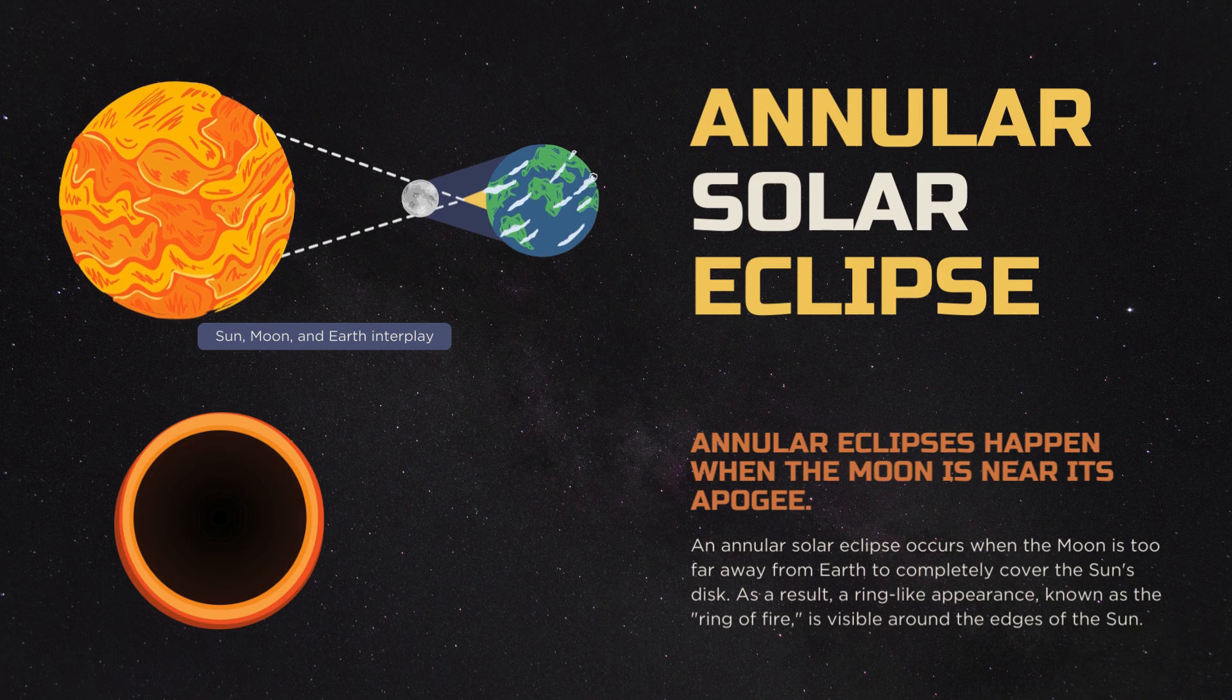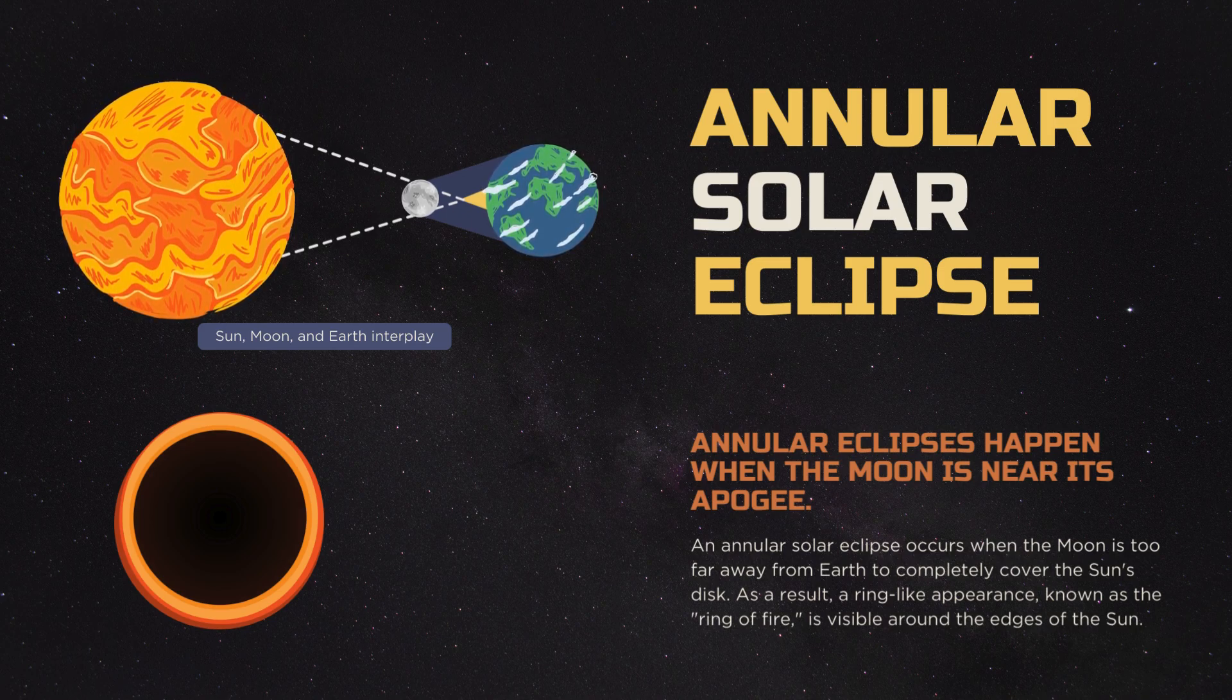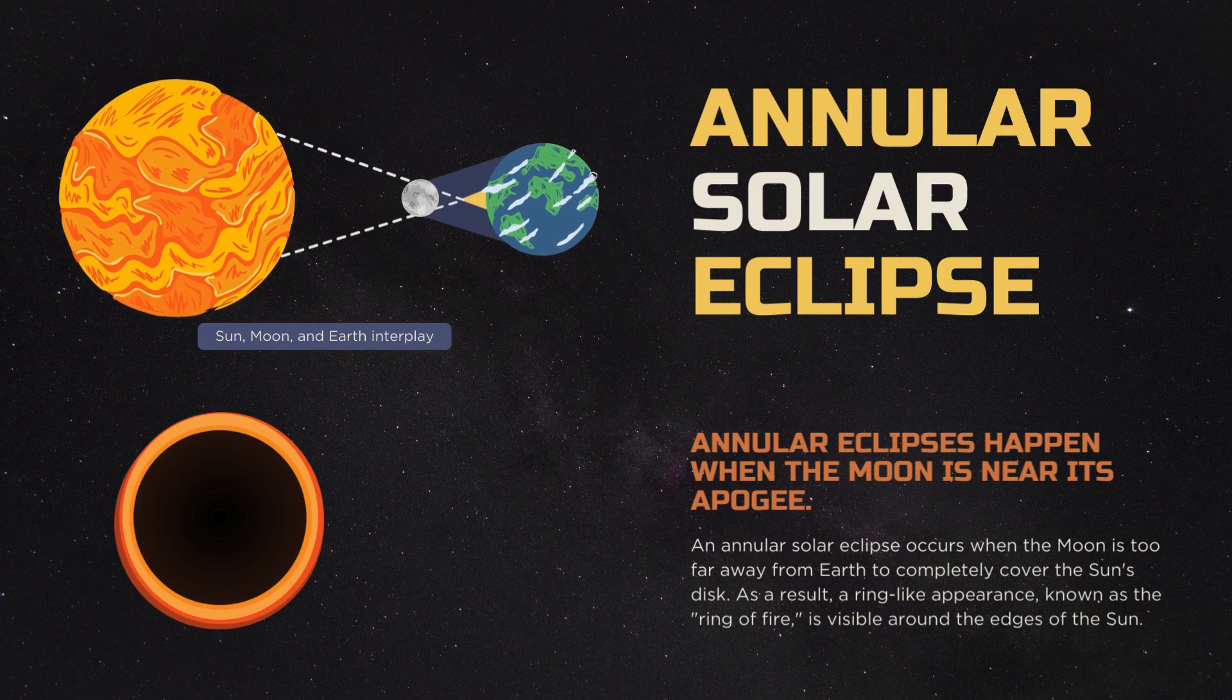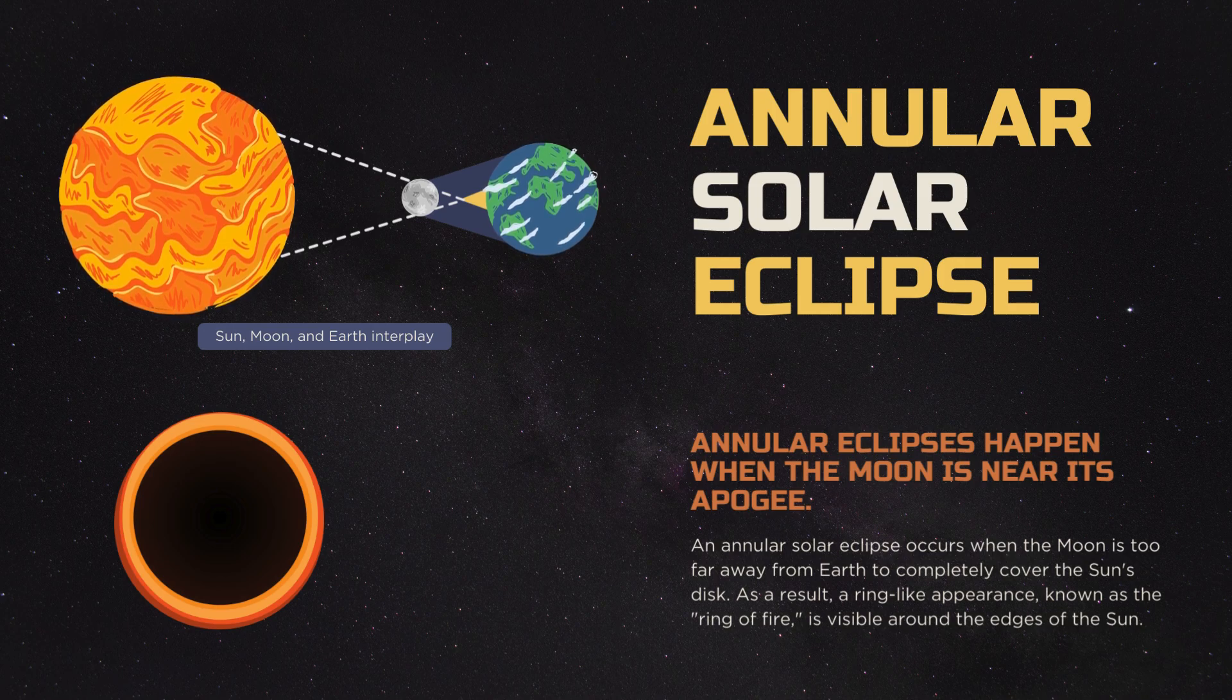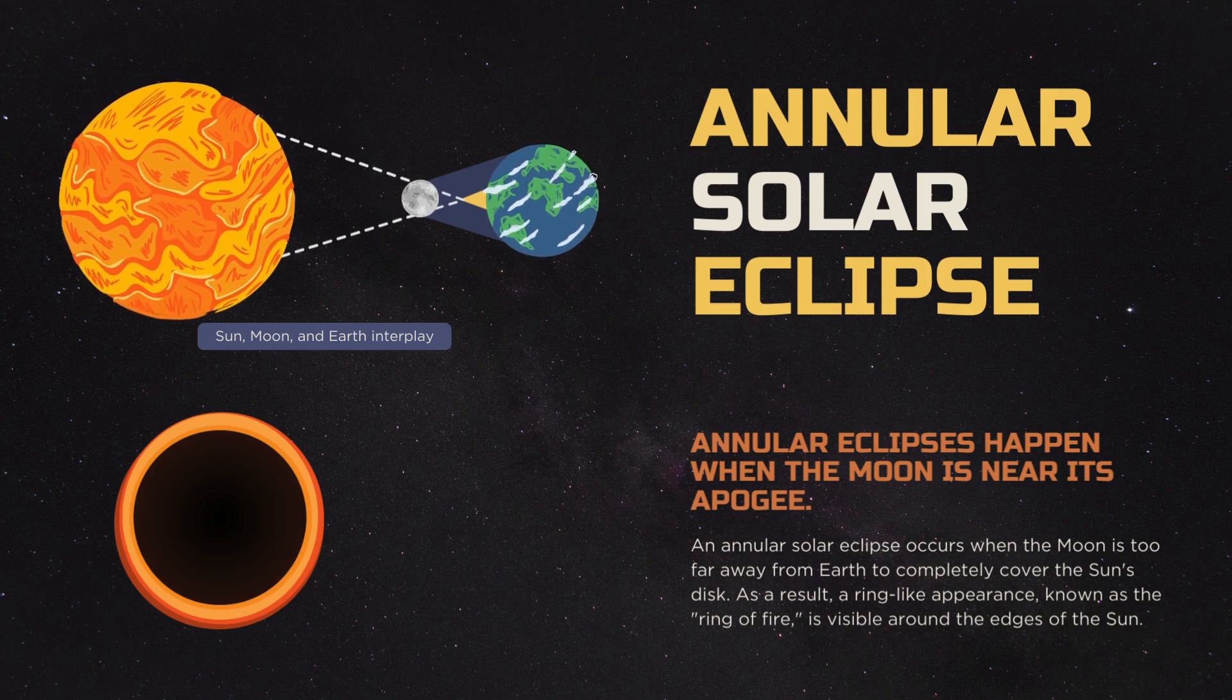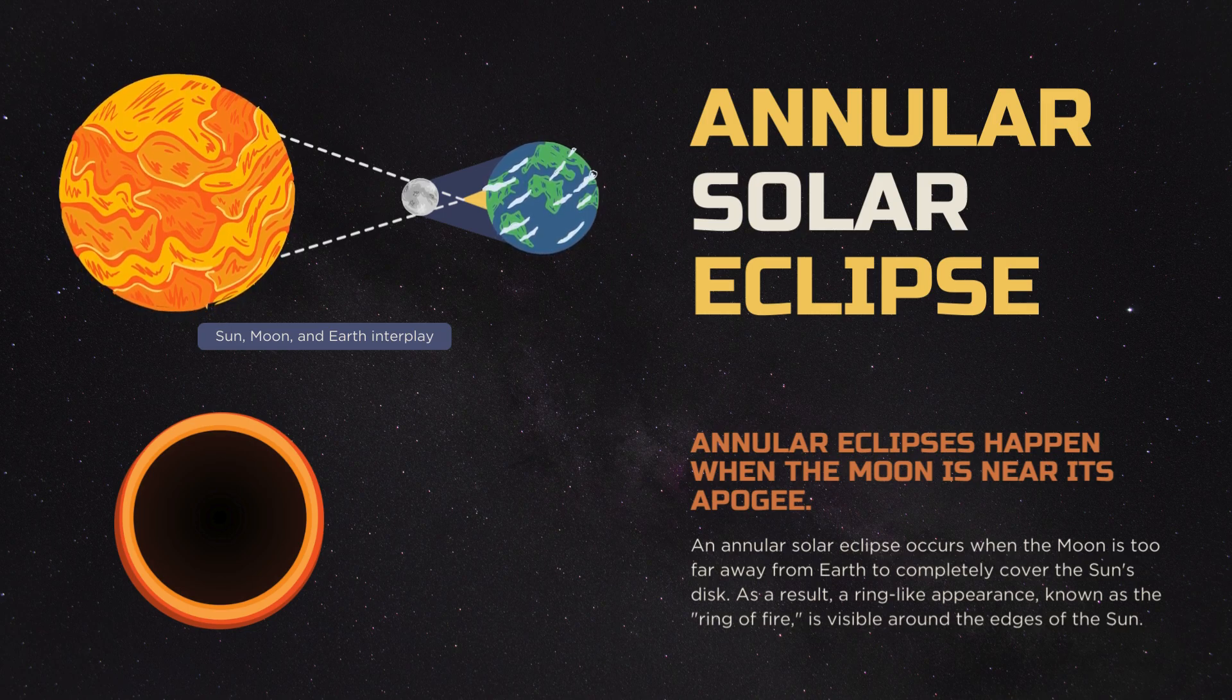And you can do this practically by taking a small disk and putting it close to your eyes, then taking it far. When it's close to your eyes, your vision will be blocked. Likewise, when the moon is close to earth, it appears that it is blocking the entire sun. But when it's away from the earth, it appears as if it is not completely covering. So that's basically the difference.